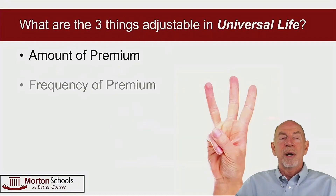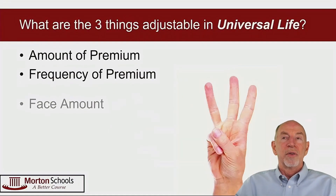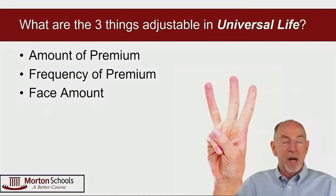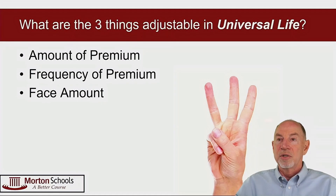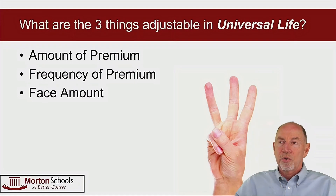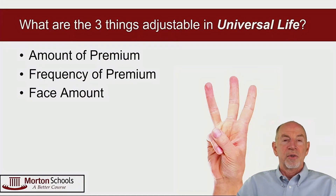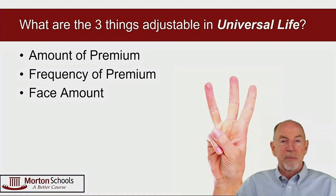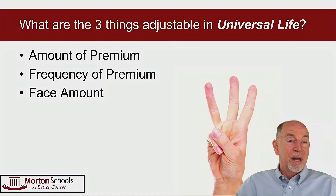That flexibility allows us to do three main things we can adjust inside the universal life policy. There's also one more thing that's adjustable, but you don't control — the insurance company does. The three things you can adjust are: the amount of premium, the frequency of premium, and the face amount.